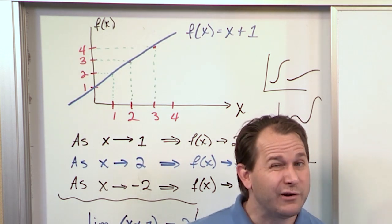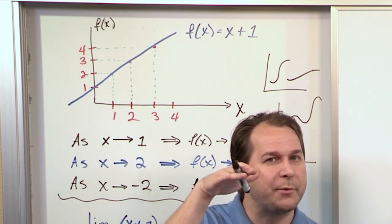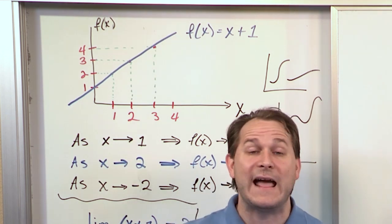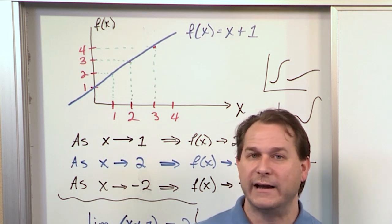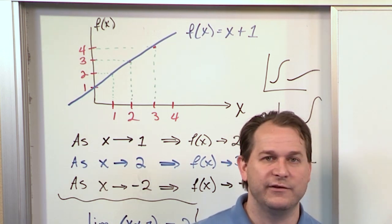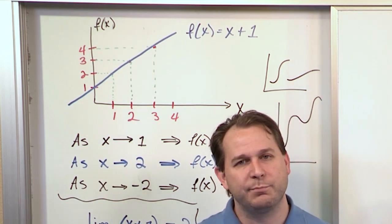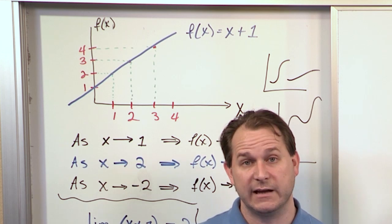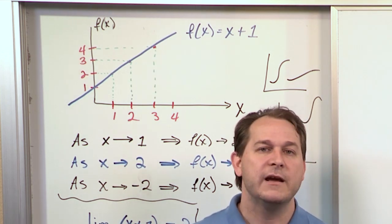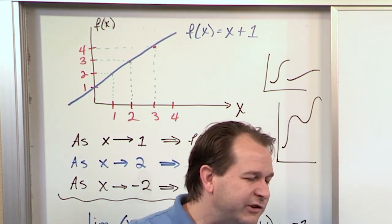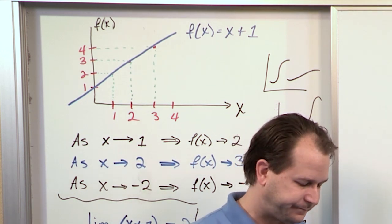When you have weird functions — functions that misbehave, that jump around, or have an infinity in there — then you can't just plug in to find the limit. The definition of the limit says you approach it infinitely close and see how the function behaves.